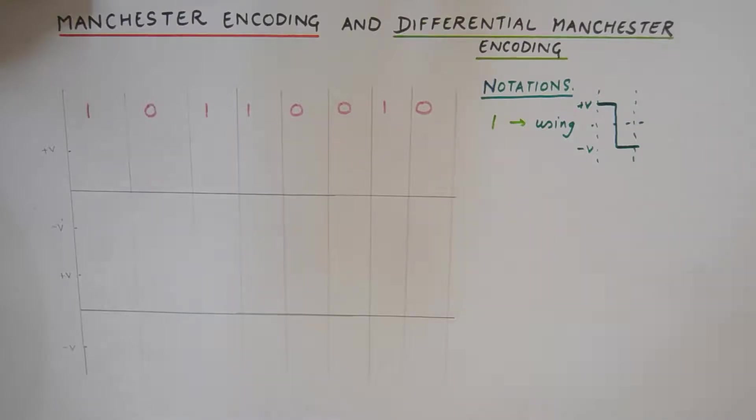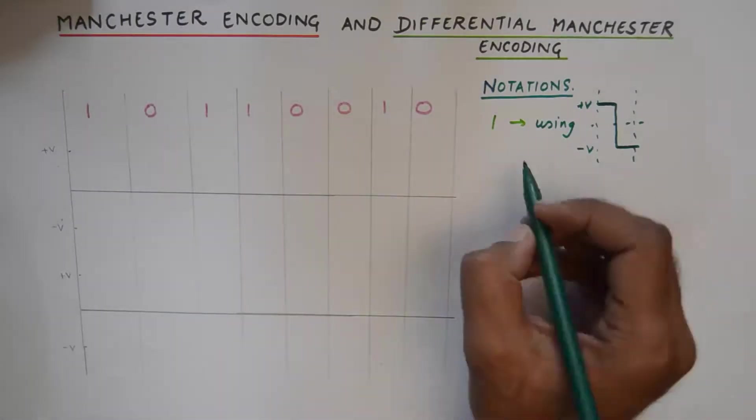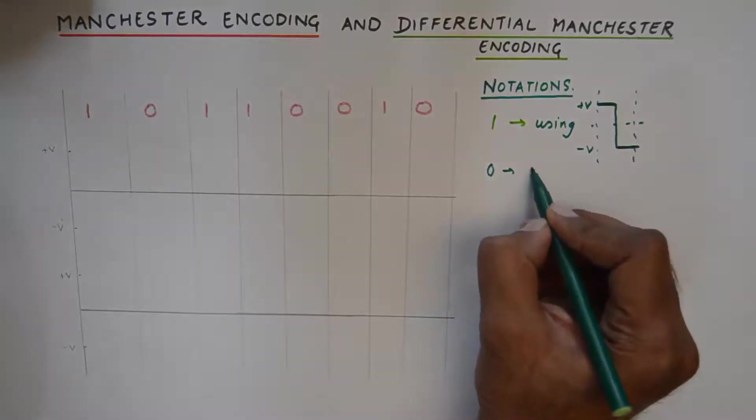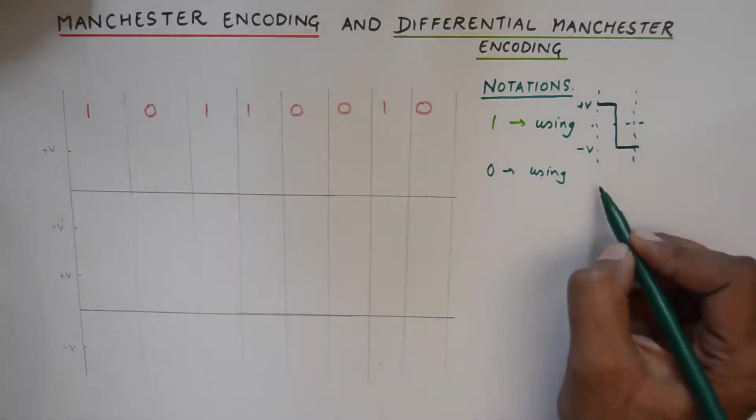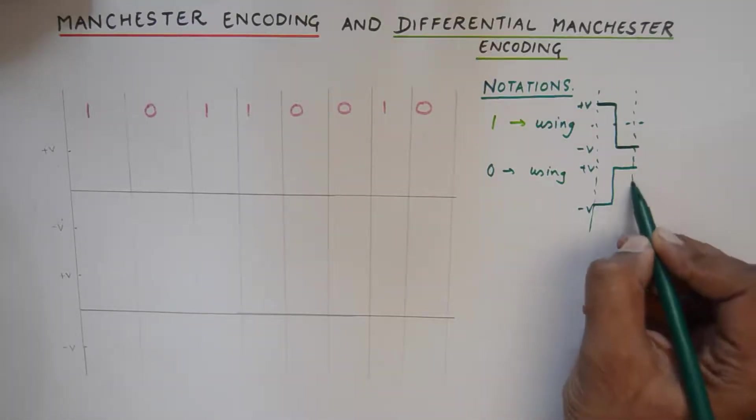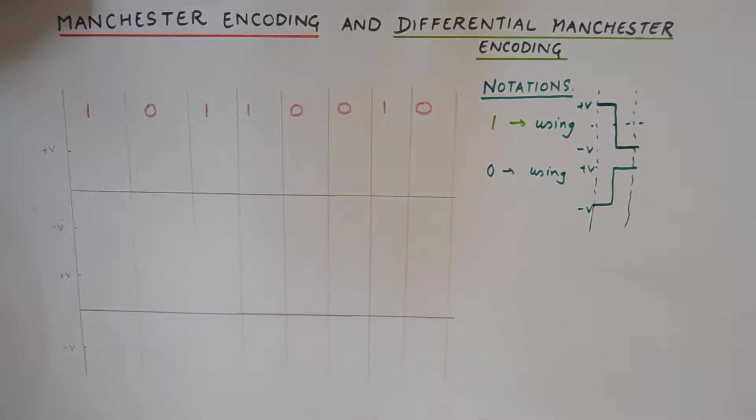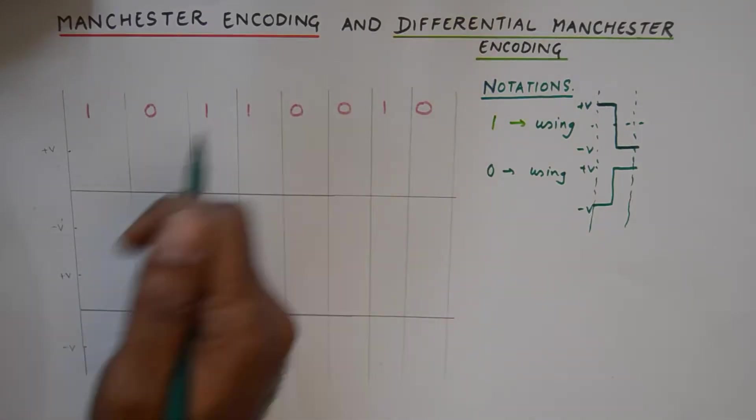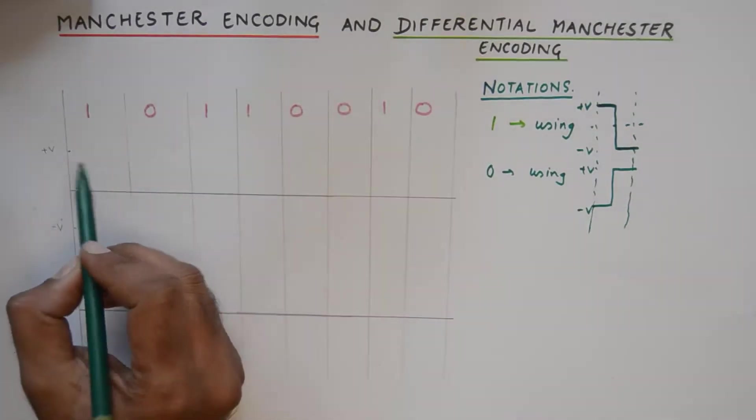And similarly a zero is represented using the exact opposite notation. So zero starts from a negative voltage and goes to a positive voltage within the half time of the bit period. After having these notations in mind we could encode this code using Manchester encoding.